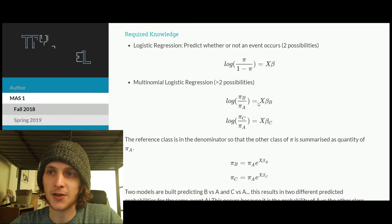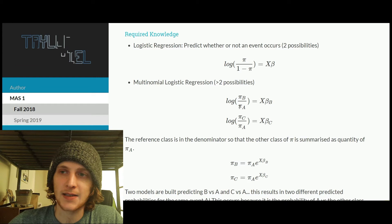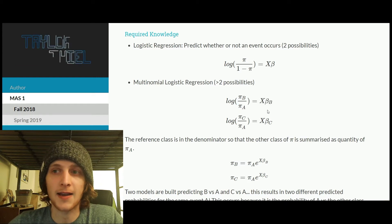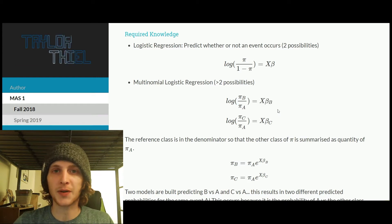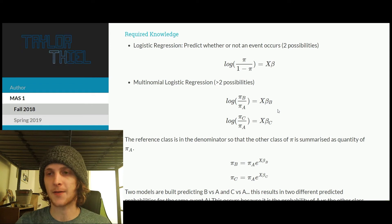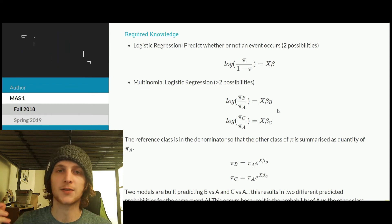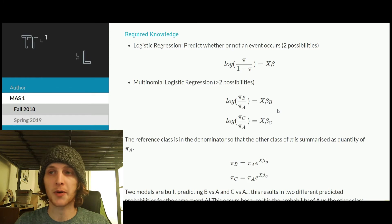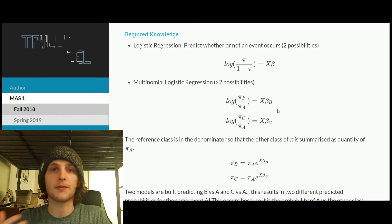And with these two separate regressions, what we say is we have the reference class of A. And that's because we're going to build these logistic regressions, or fit these parameters, with respect to that one class. That's what we're going to build everything in reference to.